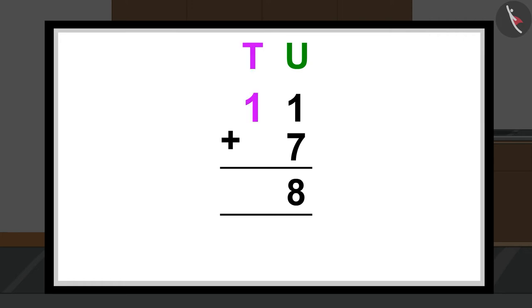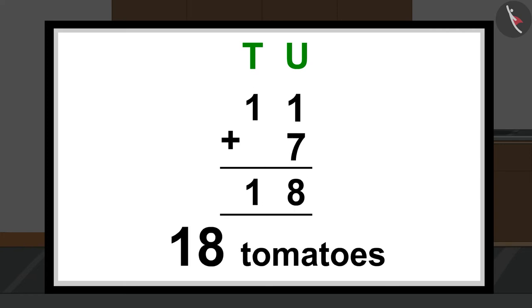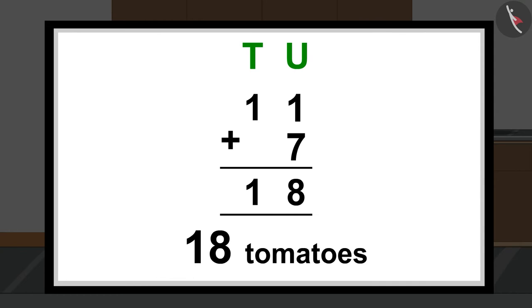Now, we will add numbers in the tens section. But here, there is only one written. This is why we will write 1 under the tens section. Just like this, 11 plus 7 is equal to 18. Gaffee's mother has 18 tomatoes in total.